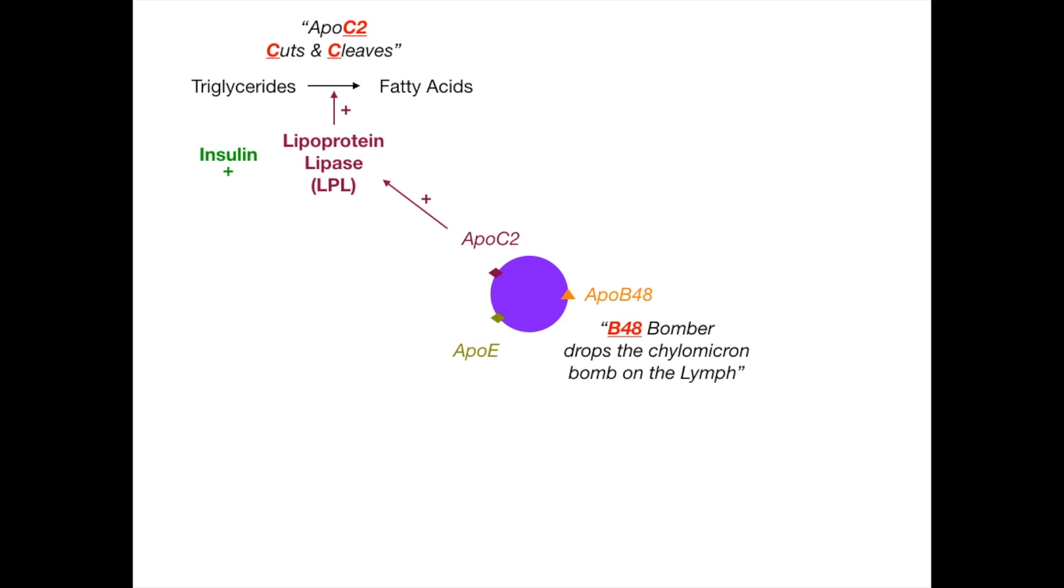Now Apo E is the receptor that does that recycling. So Apo E is sort of like the gatekeeper that lets all of these remnants in to the hepatocytes. So they get reuptaken by the liver so that they can be recycled throughout this system.